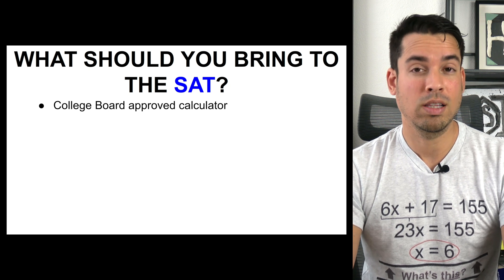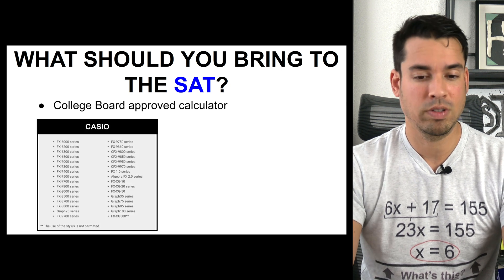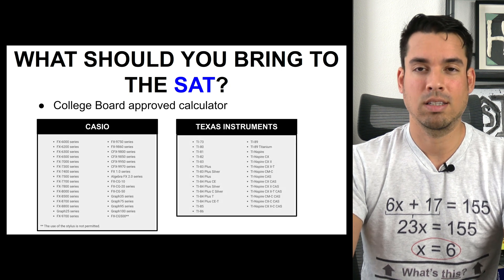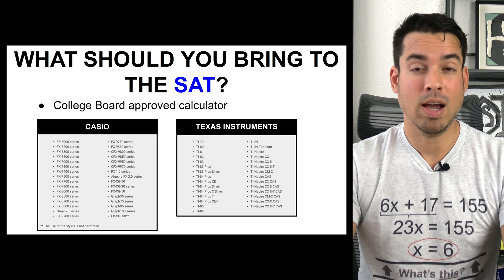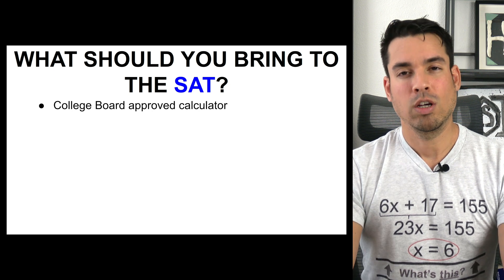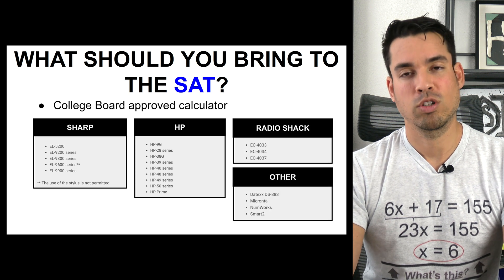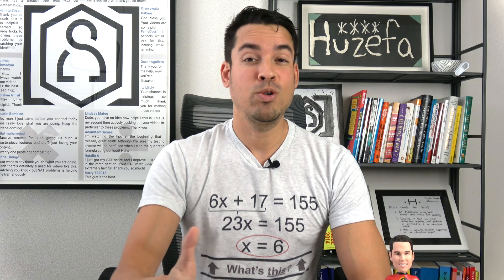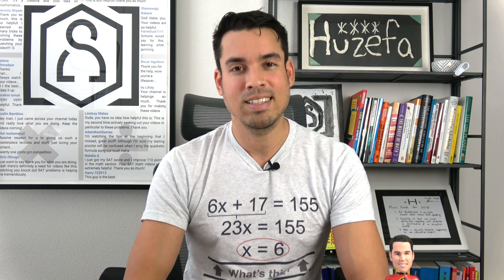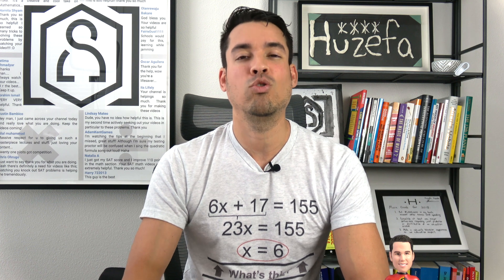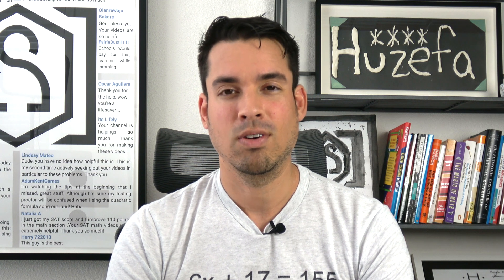In terms of College Board approved calculators, there are quite a few on the list. We have all the Casio approved calculators, Texas Instruments — most of my students use a Texas Instruments calculator — as well as options from Sharp, Hewlett Packard, Radio Shack, and a few other brands. Whatever you have that's on this list will do the job perfectly well. I hope you guys enjoyed this video — if you did, please click that like button, and if you want more information on the SAT from the Scaler Learning channel, make sure to click subscribe. Thank you guys so much and I'll see you in the next video!